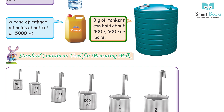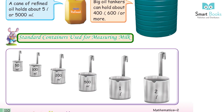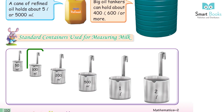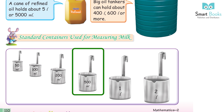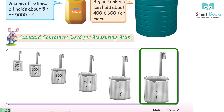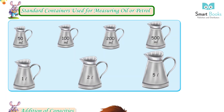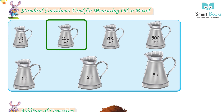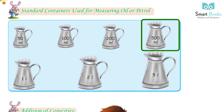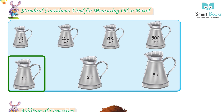A can of refined oil holds about 5 liters or 5000 milliliters. Big oil tankers can hold 4600 liters or more. Standard containers used for measuring milk: 50 ml, 100 ml, 200 ml, 500 ml, 1 liter, 2 liter. Standard containers used for measuring oil or petrol: 50 ml, 100 ml, 200 ml, 500 ml, 1 liter, 2 liter, 5 liter.